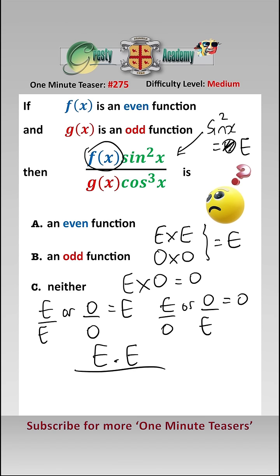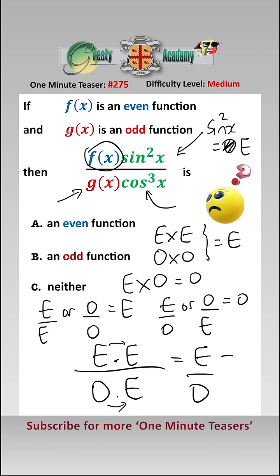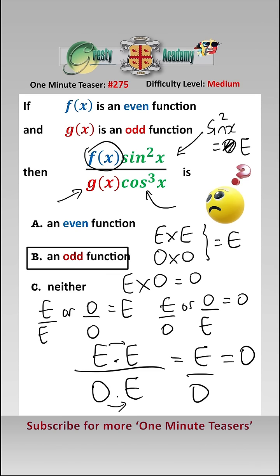So we have an even function times an even function. g(x) is an odd function, and cos(x) is an even function, so cos cubed of x is also an even function. So we have even times even over odd times even, which equals even over odd, which is an odd function. Answer b.